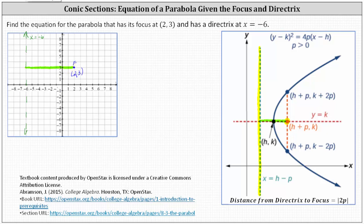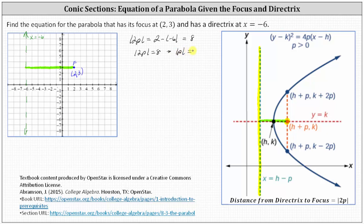This is a horizontal distance, and therefore we can determine it by taking the x-coordinate of the focus, given by 2, and then subtracting negative 6, given by the equation of the directrix. So we have the absolute value of 2p is equal to 2 minus negative 6, which equals 8. Dividing both sides by 2 gives us the absolute value of p equals 4.